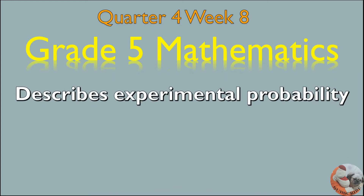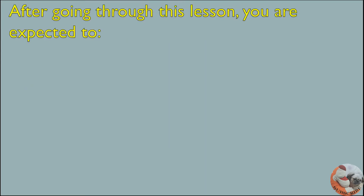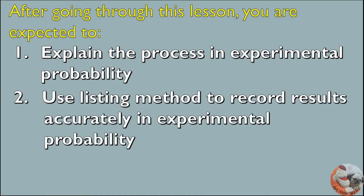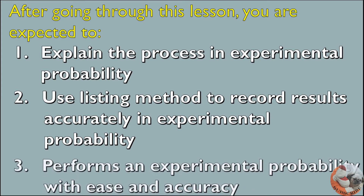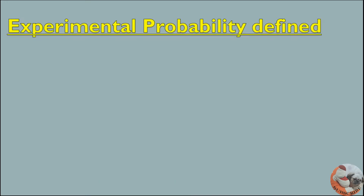This lesson describes Experimental Probability and performs an Experimental Probability and records results by listing. After going through this lesson, you are expected to: 1. Explain the process in Experimental Probability. 2. Use the Listing Method to record results accurately in Experimental Probability. 3. Perform an Experimental Probability with ease and accuracy.